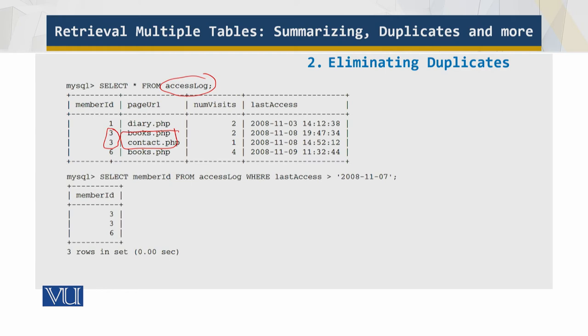Now imagine you want to get a list of the IDs of users that have accessed the site since November 7. You might create a query as follows. Now there's a problem over here. The value 3 appears twice in the result. This is because there are two rows in the access log table with member ID of 3 and last access later than November 7, representing two different pages viewed by user number 3.